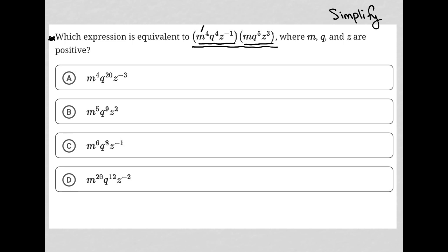Well, I'd start by multiplying the like variables. So I have m to the fourth power times m. Remember, there's an invisible first power on any variable that does not have an exponent listed.